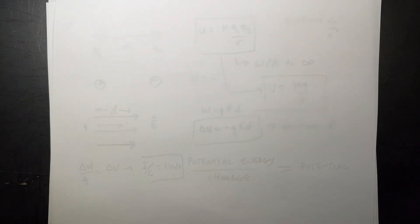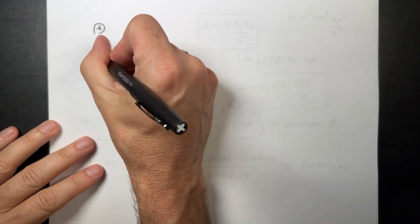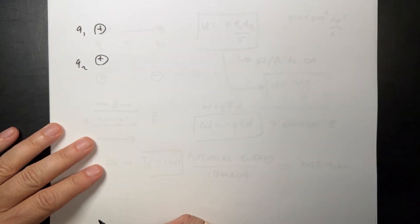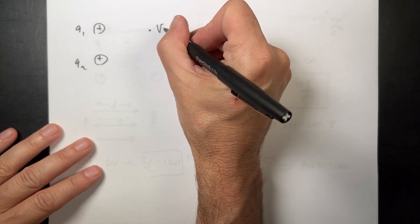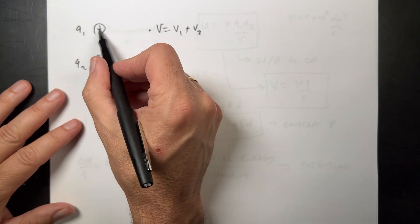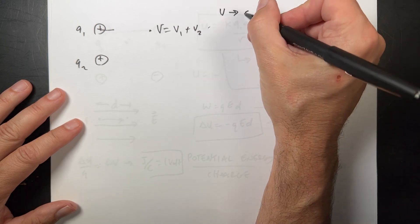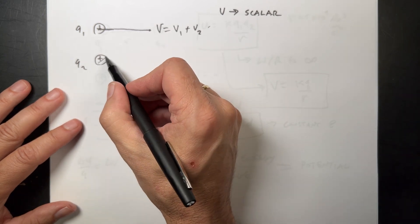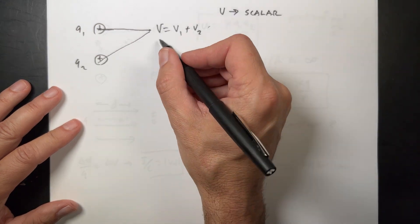Remember when we were talking about superposition for electric fields? Well, superposition works for electric potential also. So if this is Q1 and Q2, I can find the potential right here as the sum of the potentials, V equals V1 plus V2. Now, it's actually a lot easier because since electric potential is a scalar, we don't have to worry about direction. So all I need to know is that distance and that distance and find the potential due to each one and add it together.